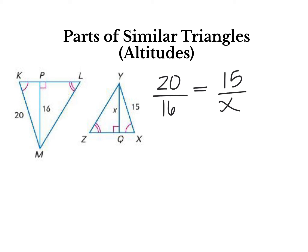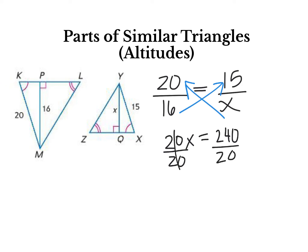When you cross multiply, the x value — we have 20 times x gives you 20x. When you cross multiply 16 times 15, you get 240. And then we just divide both sides by 20 and you get x equals 12. Setting up the proportion is the biggest deal, and you can do it with the heights as well of the triangle.